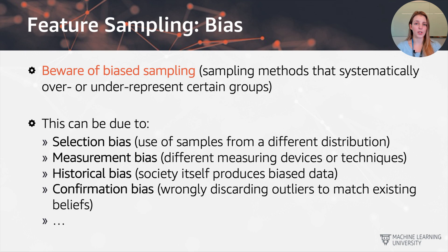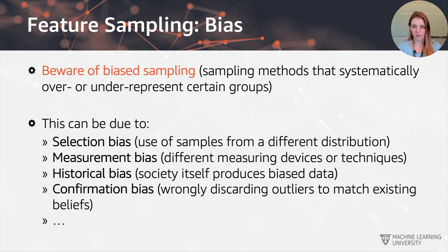The next topic is feature sampling, or the sampling bias that can occur. This is a warning to be aware of biased sampling — sampling methods that systematically over- or under-represent certain groups. There are many potential sources of this bias. The first is selection bias: if you go out to record health information and you start sampling in front of a high school, you'll get a certain age range and likely many healthy records. If you repeat the same sampling in front of a hospital, the age range and health records would look very different. So it really depends on where and who you sample and what groups represent the data.